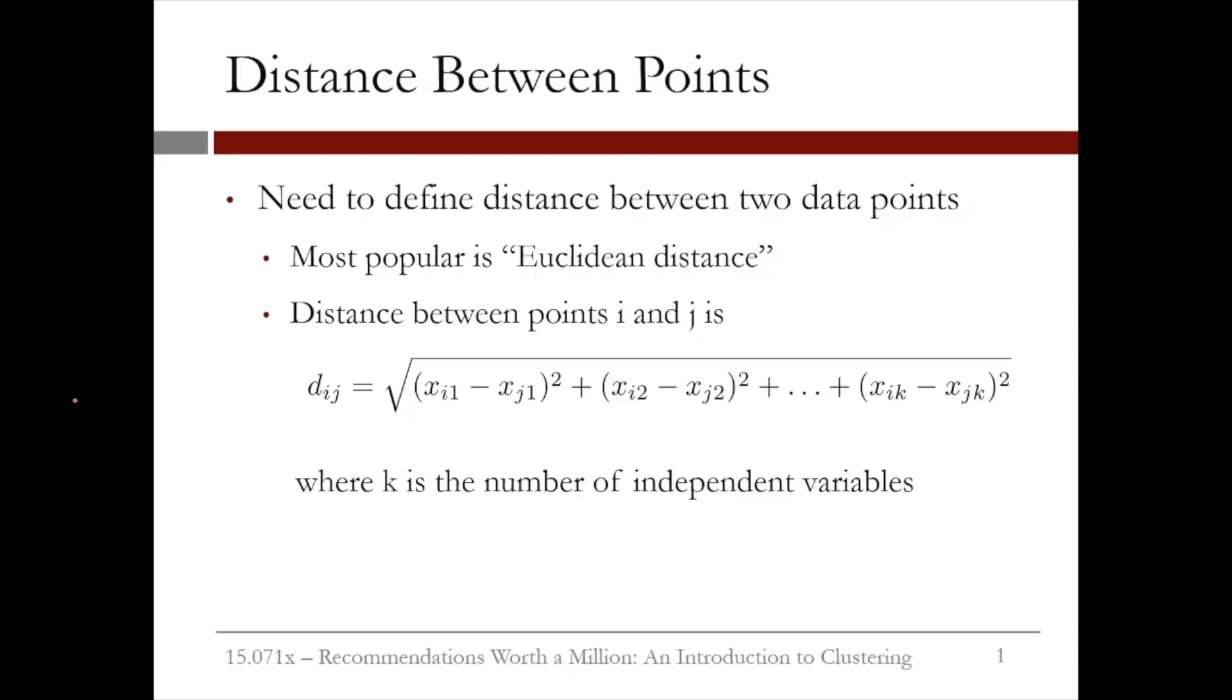Suppose we have two data points, I and J. The distance between the two points, which we'll call d_ij, is equal to the square root of the difference between the two points in the first component squared, plus the difference between the two points in the second component squared, all the way up to the difference between the two points in the k-th component squared, where k here is the number of attributes or independent variables.